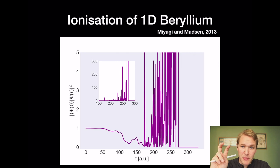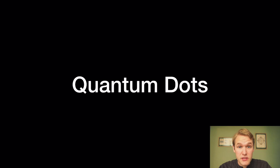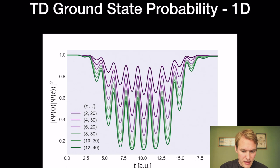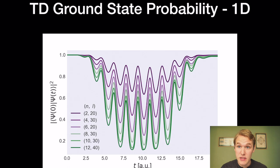Now over to quantum dots, which has been my main area of study. We computed time-dependent ground-state probability studies of one-dimensional quantum dots for systems of two, four, six, eight, ten, and twelve electrons. We see that as the system size increases and we subject it to a laser field, there is less probability of finding the system in the ground state — which is interesting in itself.